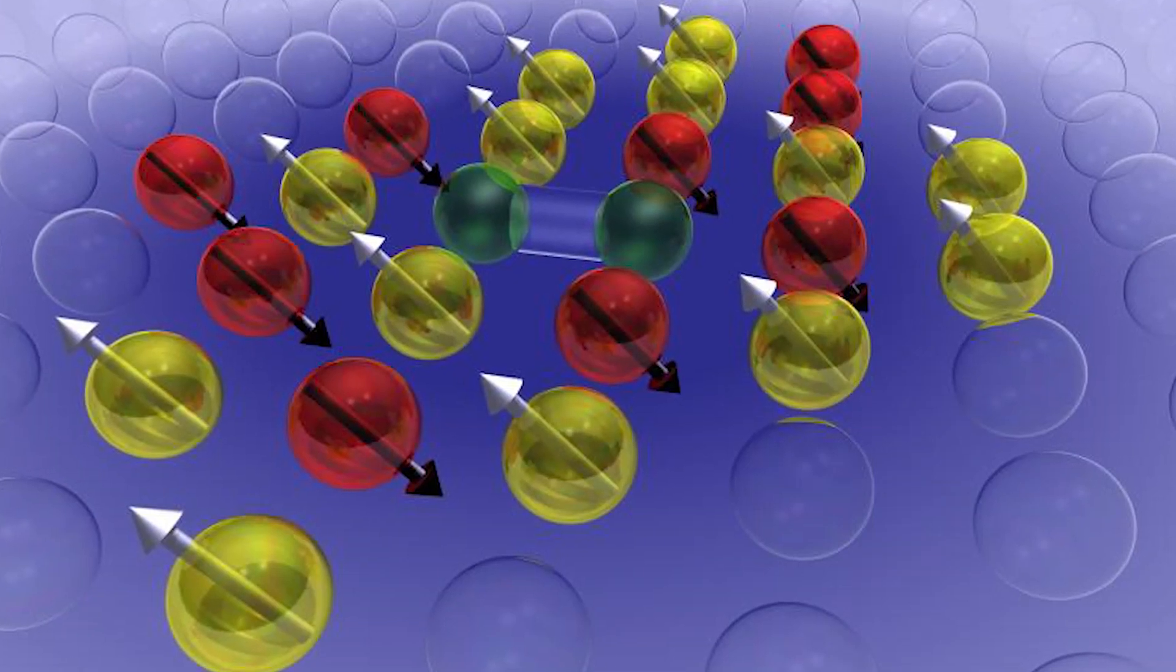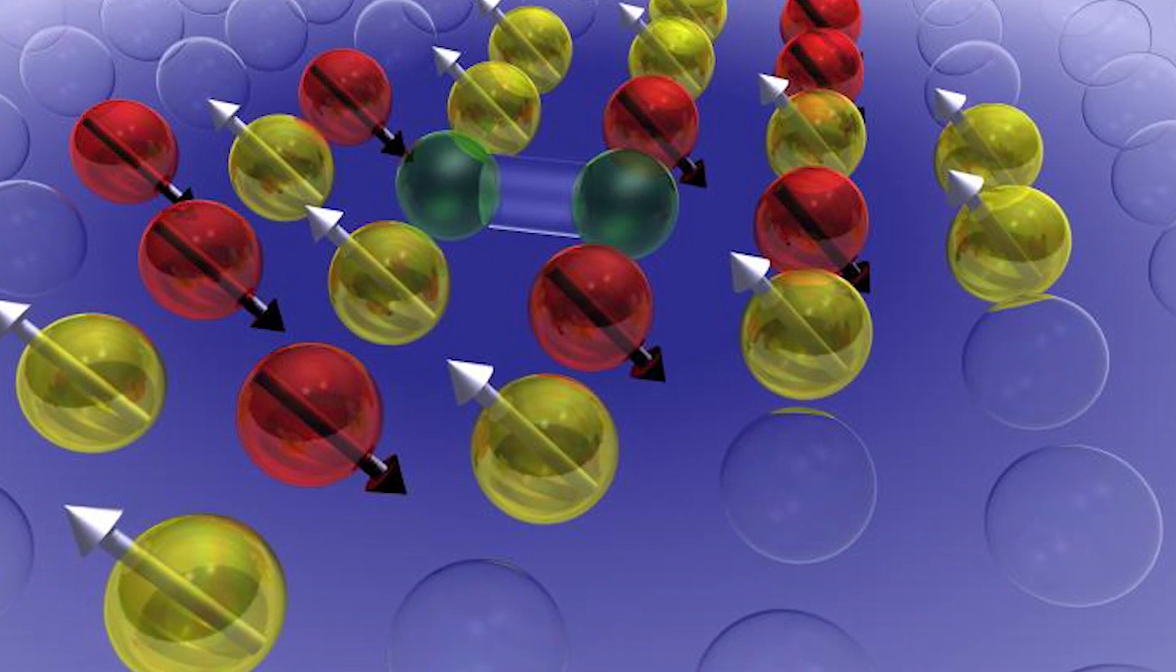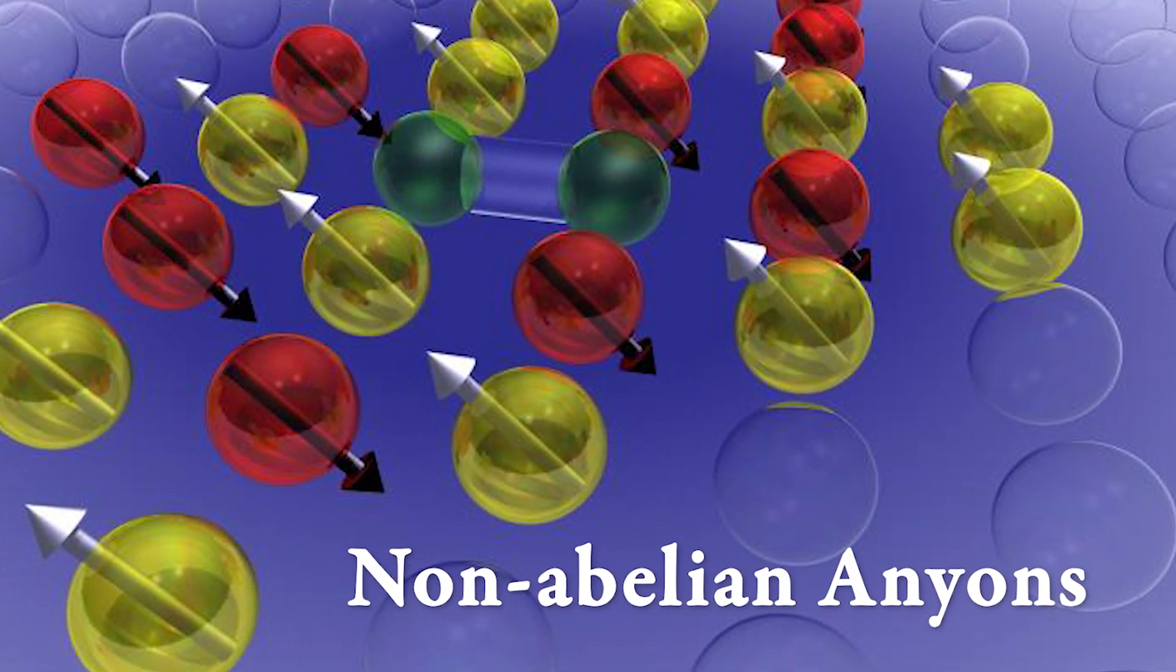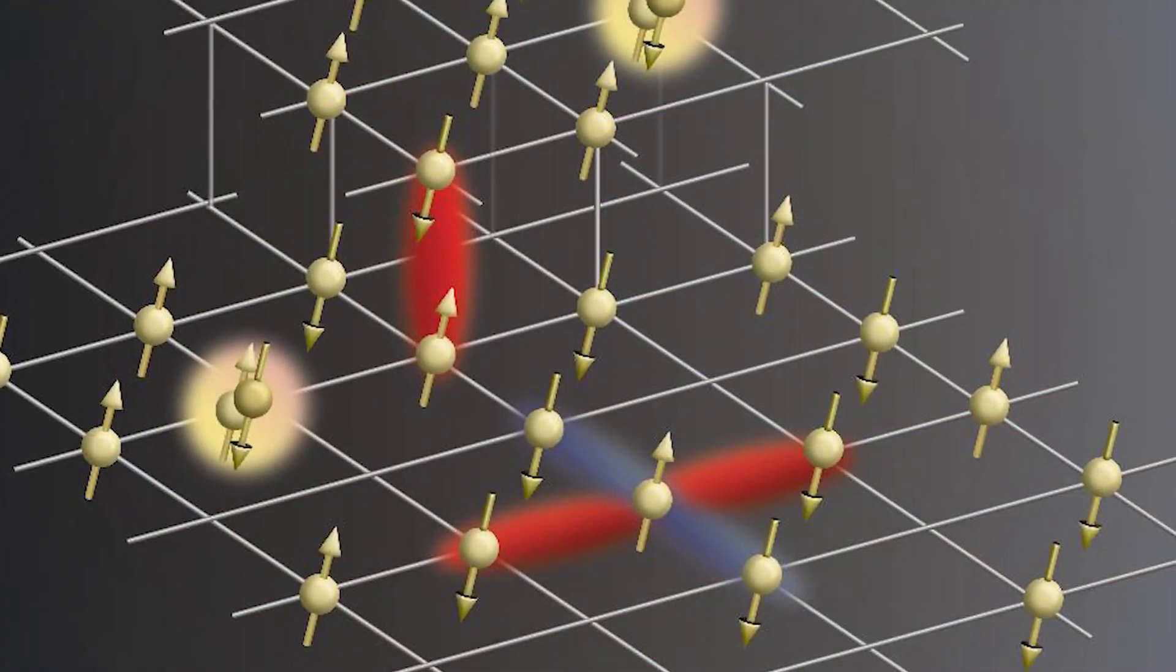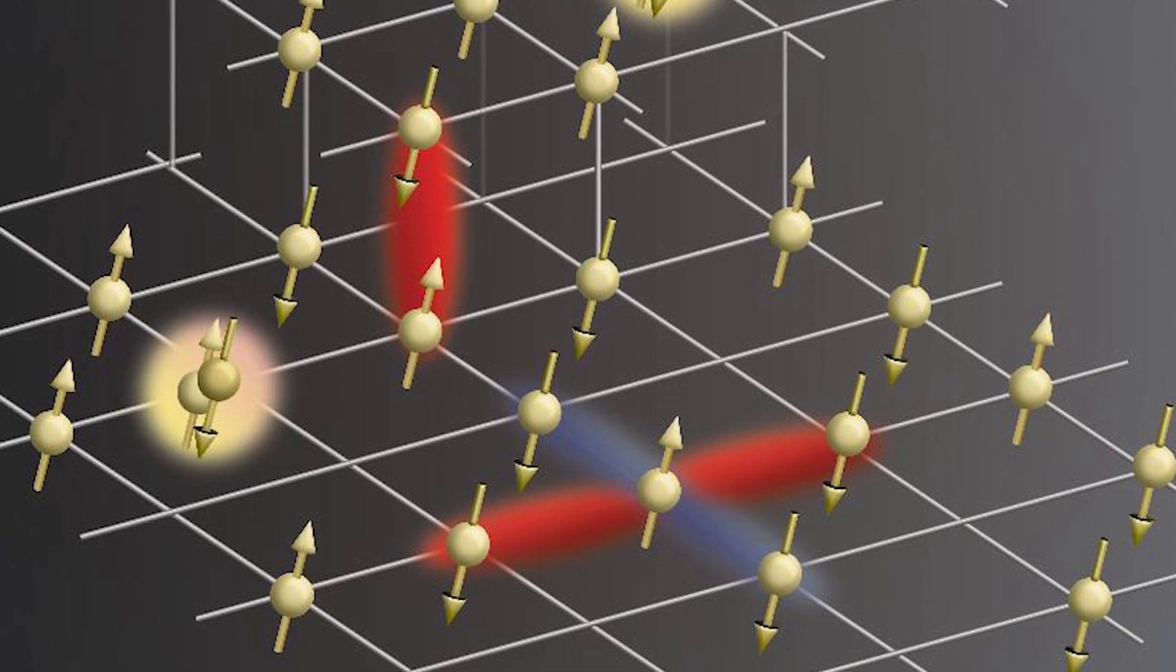Majorana quasiparticles are very exotic particles that in a solid can emerge from collective states from electrons, but very different from electrons. They are actually their own anti-particles, and even more exotically they are what we call non-abelian anyons. That means that if you take two of them and exchange them twice to get back to the initial state, you actually get back to a very different state. If you have several Majoranas and you exchange those, the final state even depends on the order of the exchange operation. It turns out that that property makes them extremely useful for quantum computation.